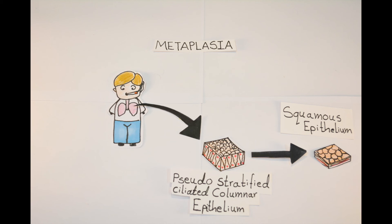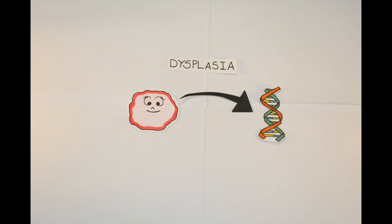The fourth type of cell adaptation is metaplasia. Simply, metaplasia is a replacement of a mature cell in a tissue with another different mature cell. For example, in a smoker's lung, the cells that cover the respiratory tract — the pseudostratified columnar ciliated epithelial cells — are replaced with squamous epithelial cells. The body does this replacement to protect the respiratory tract, because squamous epithelial cells are similar to our skin and can better withstand irritants like carbon monoxide.